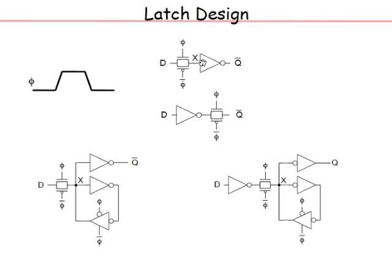Storage of information happens at node x — it is a dynamic node. Information is stored as charge on parasitic capacitance from source-drain diffusion, wiring, and gate capacitance of NMOS and PMOS. However, that information can leak away due to subthreshold leakage, diode junction leakage, and gate leakage in sub-threshold processes. Dynamic latches are therefore not useful at slow speeds; they are used only at very high speeds where information is not needed for more than a nanosecond.